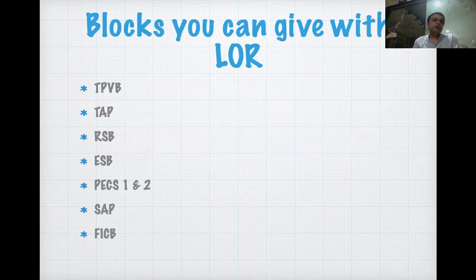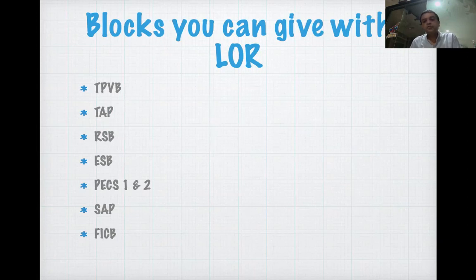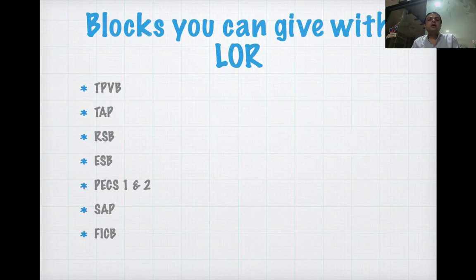Which blocks can we give with LR technique? We can give thoracic paravertebral block — it is an age-old technique, in practice for more than 100 years using landmark-guided LR technique. TAP block was introduced in the beginning of the 21st century and became popular after ultrasound-guided technique, but even with LR technique you can give TAP block very well. You can also give rectus sheath block, ESP, PECS-1, PECS-2, SAP, and fascia iliaca compartment block — providing analgesia for thoracic, abdominal, and lower limb surgery.